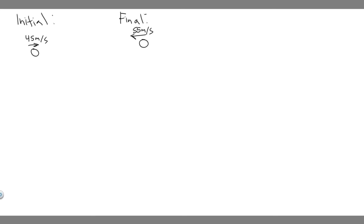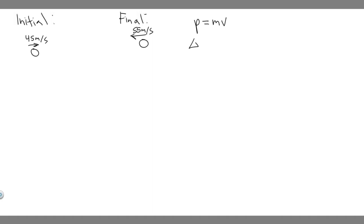For part A, we're trying to find the magnitude of the change in momentum. The momentum formula is P = mv. So the change in momentum is m times v_final minus m times v_initial, which we can factor out m to get m times (v_final minus v_initial).